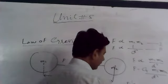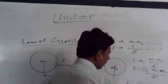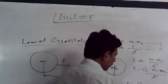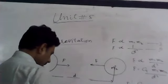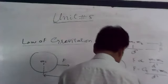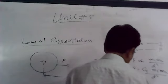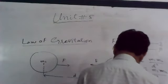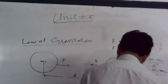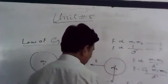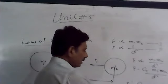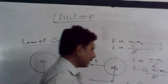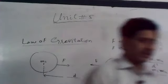F is equal to G M1 M2 over D squared. The value of G is 6.673 into 10 raised to the power minus 11 Newton meters squared per kilogram squared. That is the gravitational constant G.